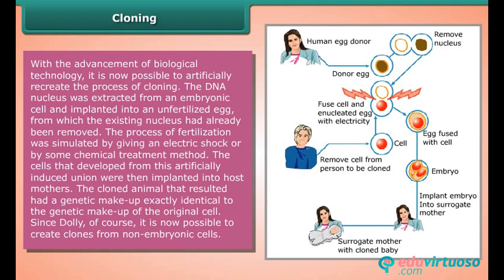In artificial cloning, the DNA nucleus is extracted from an embryonic cell and implanted into an unfertilized egg from which the existing nucleus had already been removed. The process of fertilization is stimulated by giving an electric shock or by some chemical treatment. The cells that developed from this artificially induced union are then implanted into host mothers. The cloned animal that results has a genetic makeup exactly identical to that of the original cell. Since Dolly, it is now possible to create clones from non-embryonic cells.